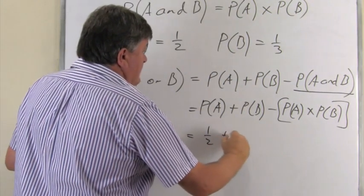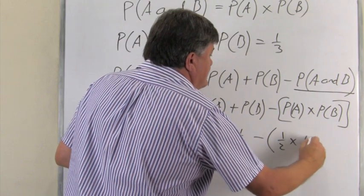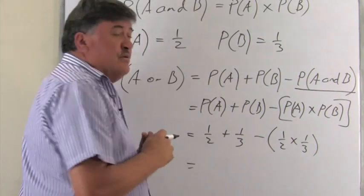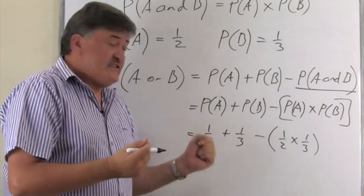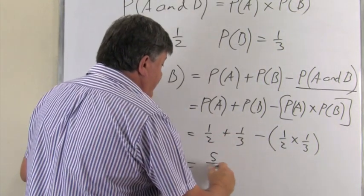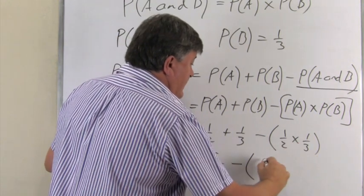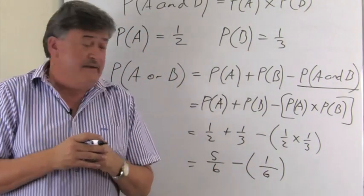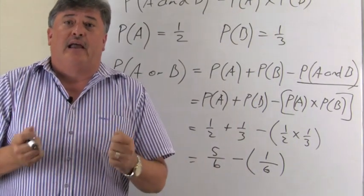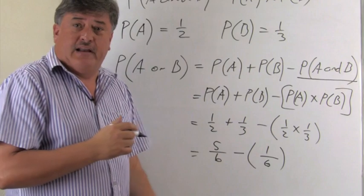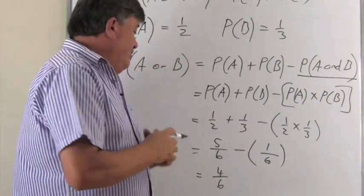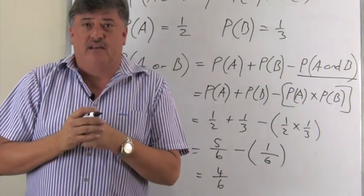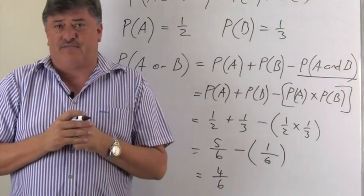Now we substitute our values. P(A) is a half, plus a third, minus a half times a third. A half plus a third has a common denominator of six: a half is three over six, a third is two over six, so they add to five over six. Minus one times one over two times three, which is one sixth — with multiplication of fractions we don't need a common denominator. Five over six minus one over six gives four over six, which simplifies to two thirds. This is the probability that the problem will be solved within the 15 minutes allowed.